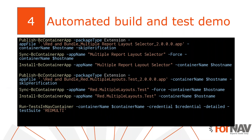Once we have all that, we can set up our build and test system. For demonstration purposes I will skip the building of my extension because that's not part of the Fornav runtime packages. I will just build my Docker container with the Fornav runtime packages and the build version of an extension with the dependency on the Fornav customizable report pack. Once all is built, I will run my tests automatically.